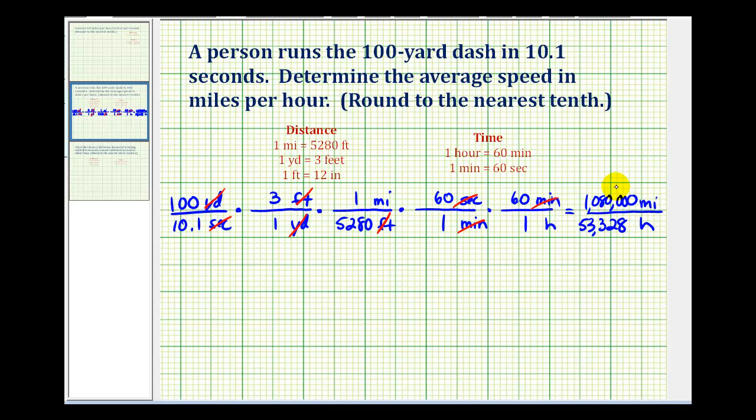So the last step is to convert this to a unit fraction, or to determine the number of miles per one hour. And we can do that by performing this division. Remember a fraction bar represents division.